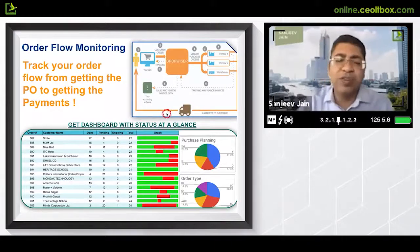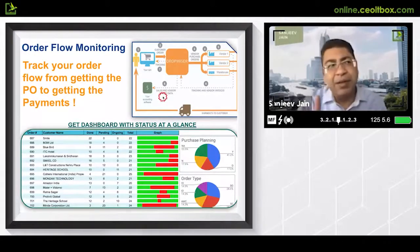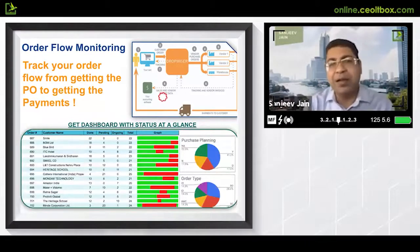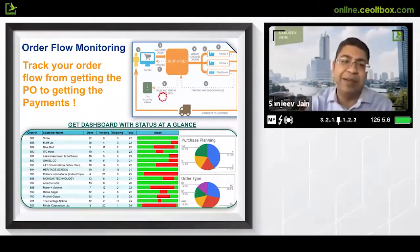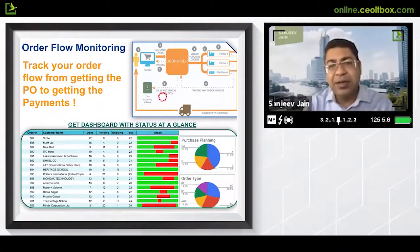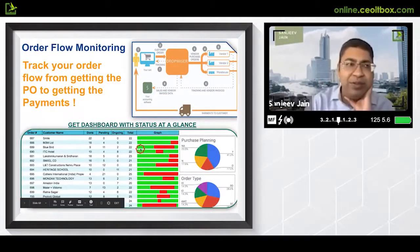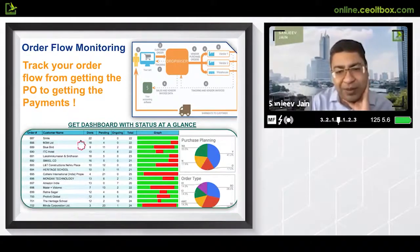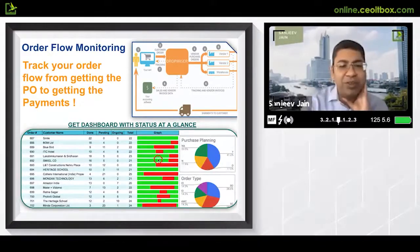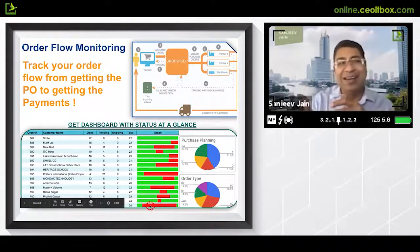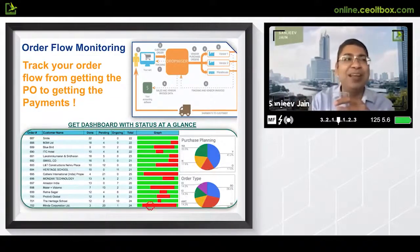Another problem I was facing was that in different activities across orders, some item is missing, some part is missing, someone didn't do a task, someone didn't fill a paper — because of which the order gets stuck. Once it gets delayed, customer complaints come, fire-fighting starts. Now with this dashboard, you can easily see all the steps in an order: how many are done, how many are pending, how many are ongoing. Just by looking at it, you can tell which orders have problems and where exactly they are getting stuck at which stage.